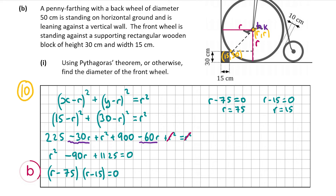However, r cannot equal 15 because if r were 15, the wheel would be below the 30-centimeter wooden block — which doesn't make sense. Therefore r equals 75 centimeters. The diameter is twice the radius, so 75 times 2 gives a diameter of 150 centimeters. That's our answer for B part one.